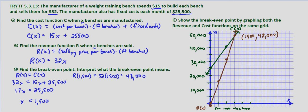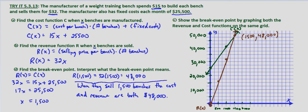So what this means is that when they sell 1,500 benches, the cost and revenue are both $48,000. Basically they have to sell 1,500 benches just to break even.